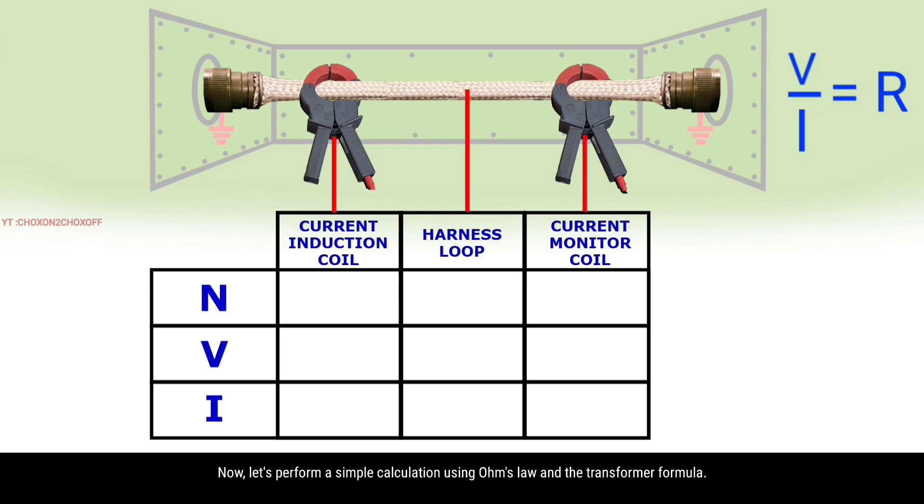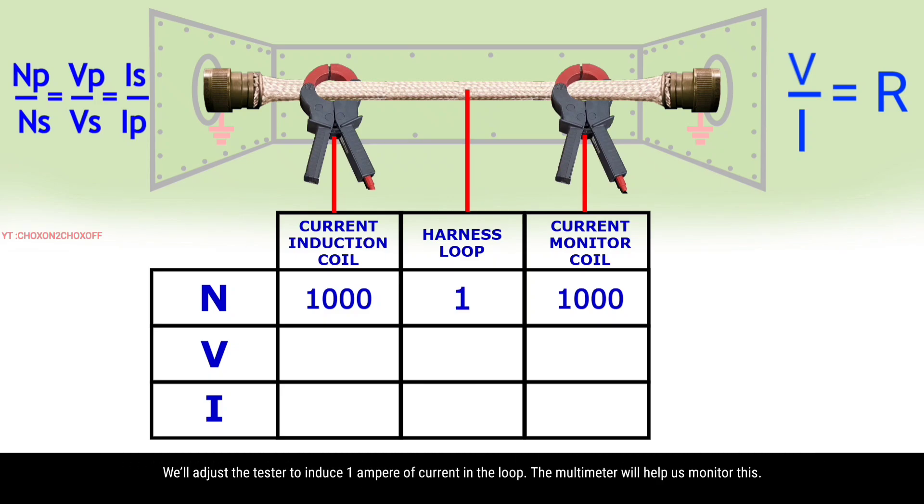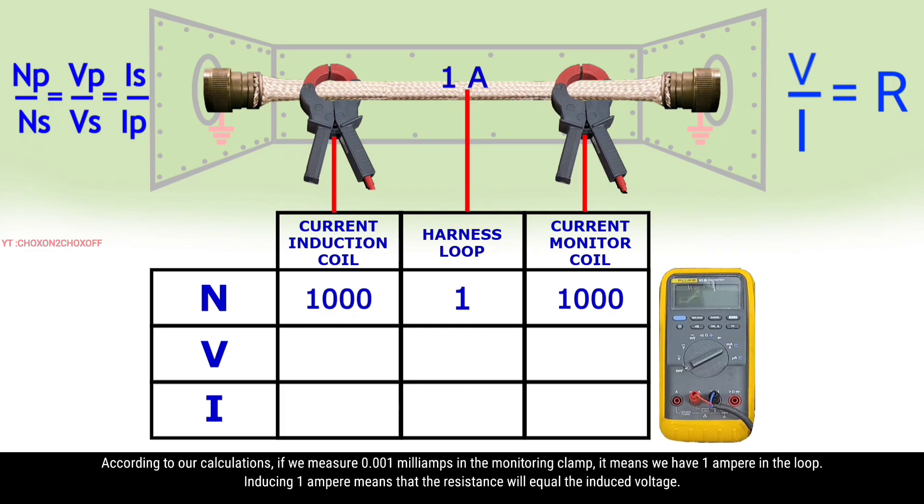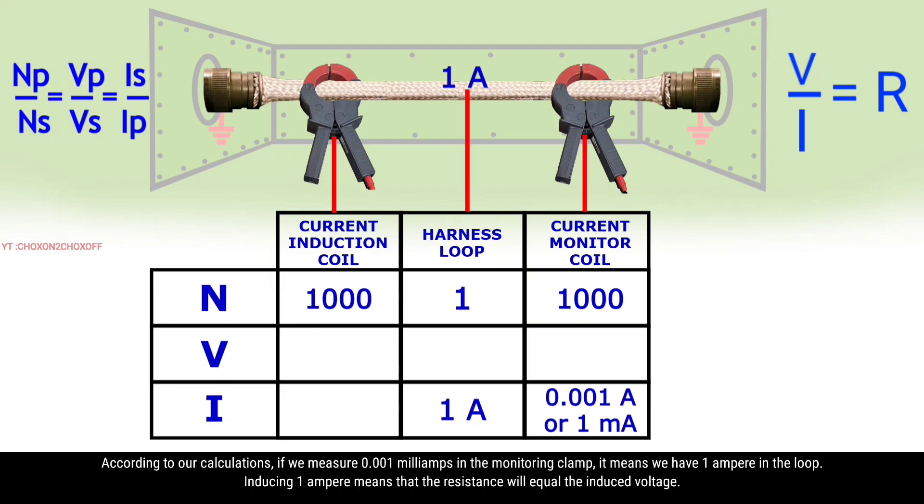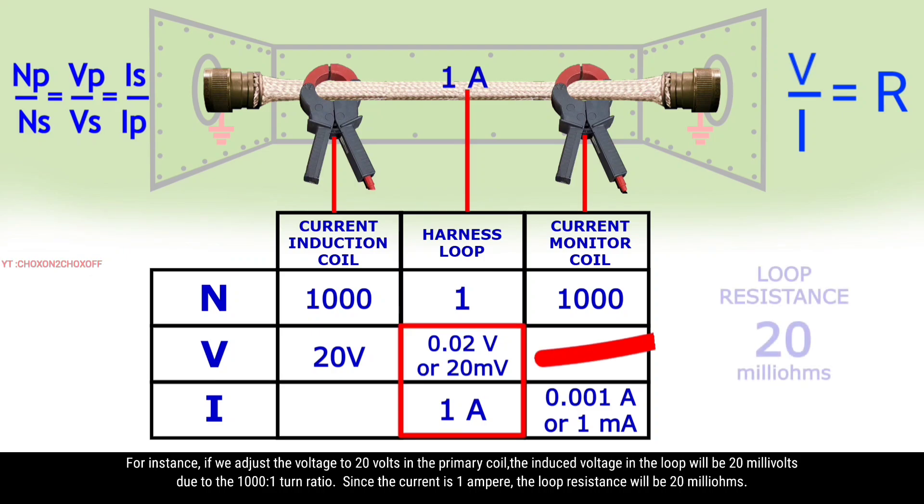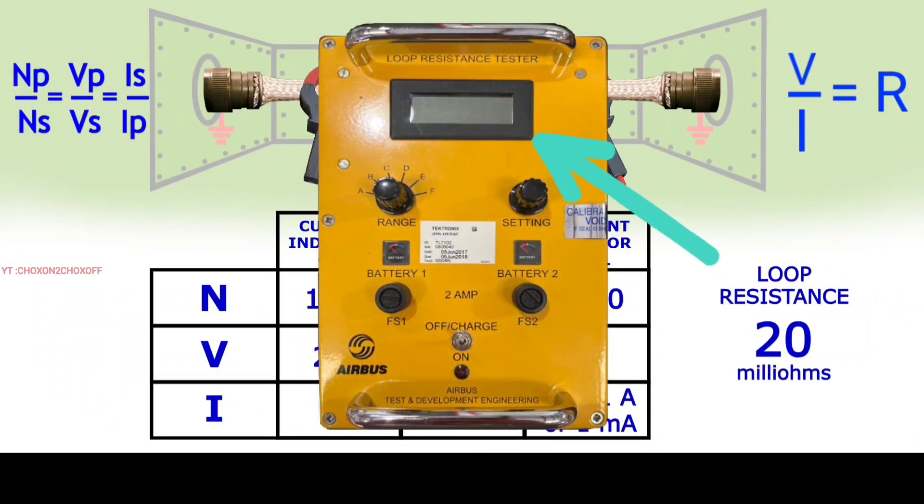Now let's perform a simple calculation using Ohm's law and the transformer formula. According to the tester CMM, the number of turns in the primary current inducing coil and the current monitoring coil is 1000, while the shielded cable acts as a single turn coil. We'll adjust the tester to induce 1 ampere of current in the loop. The multimeter will help us monitor this. According to our calculations, if we measure 1 milliamp in the monitoring clamp, it means we have 1 ampere in the loop. Inducing 1 ampere means that the resistance will equal the induced voltage. For instance, if we adjust the voltage to 20 volts in the primary coil, the induced voltage in the loop will be 20 millivolts due to the 1000 to 1 turn ratio. Since the current is 1 ampere, the loop resistance will be 20 milliohms. The LRT tester performs these calculations and directly displays the loop resistance in milliohms.